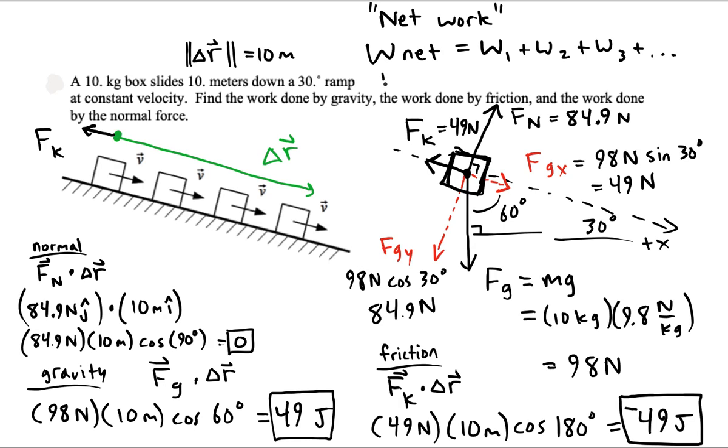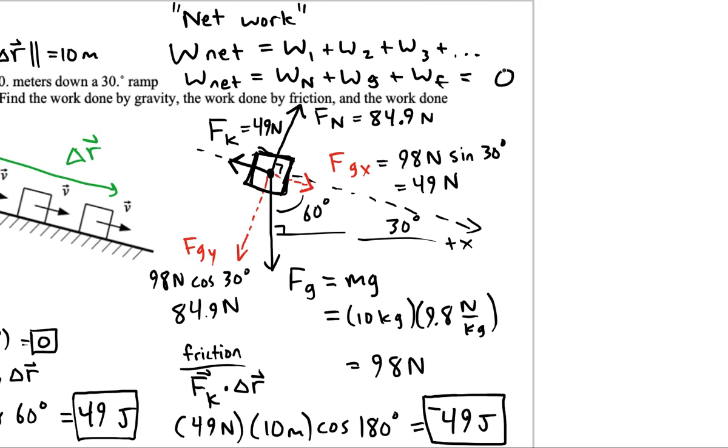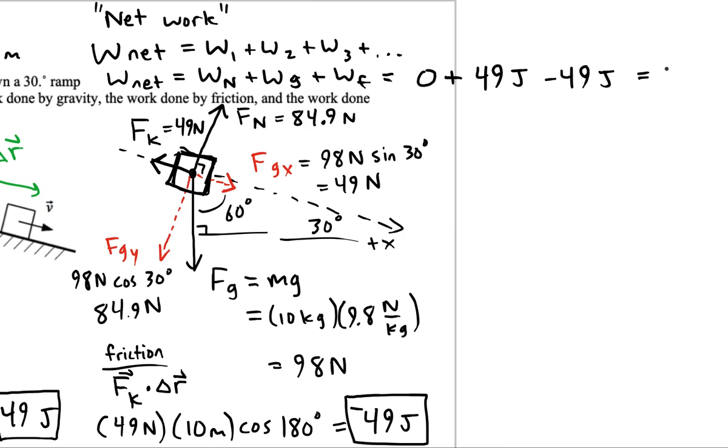So for our problem we'll find the work by adding the work of the normal force, the work of the gravity, and the work of friction too. And we can see though that for us we're going to have 0 plus 49 minus 49, and we get a net work then for this problem of 0.